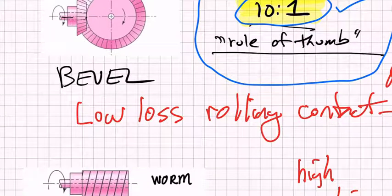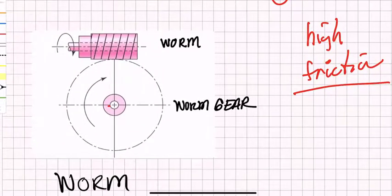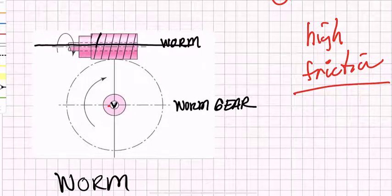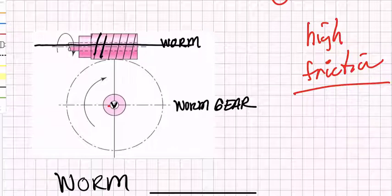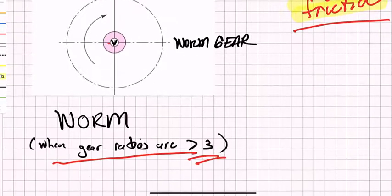An important feature of spur, helical, and bevel gears is that the teeth roll across each other, which reduces friction and makes them very efficient for torque transmission. For gear ratios much higher than 10-to-1, we use worm gears, where the worm axis is perpendicular to the gear axis. Rotating the spiral-cut worm meshes with the worm gear and rotates it. However, worm gears have very high friction because of significant sliding contact between the teeth.